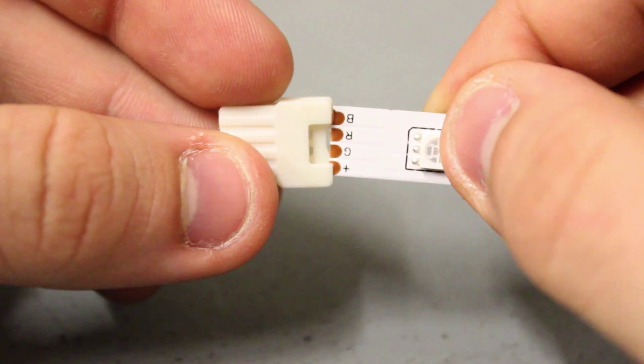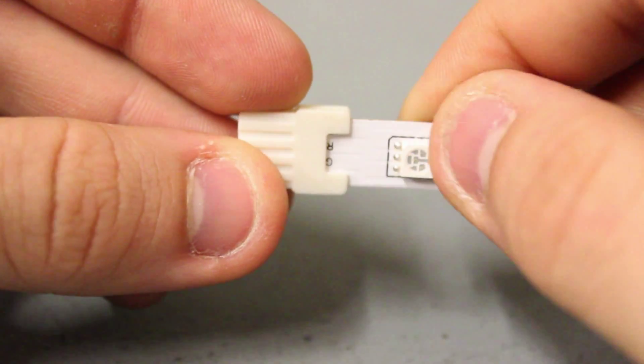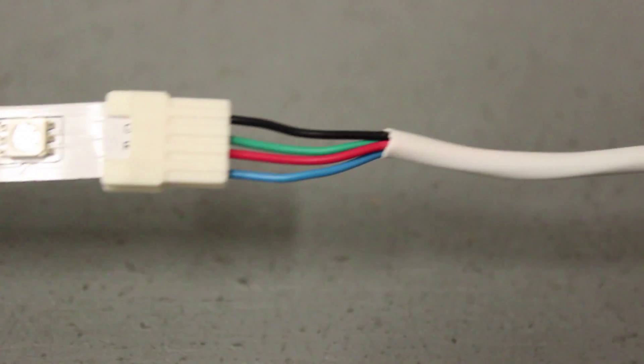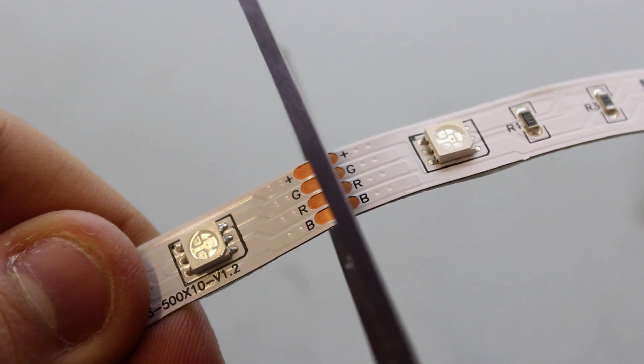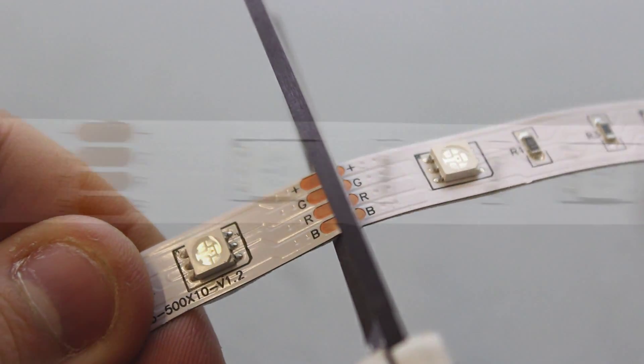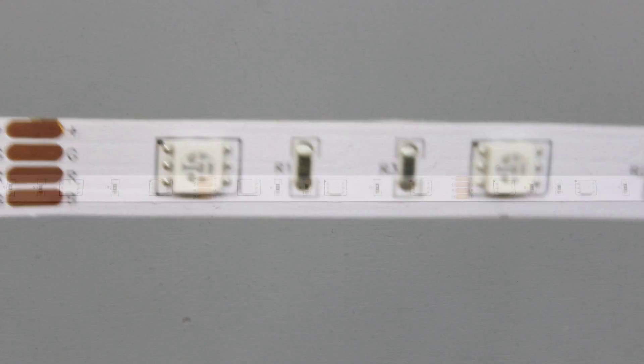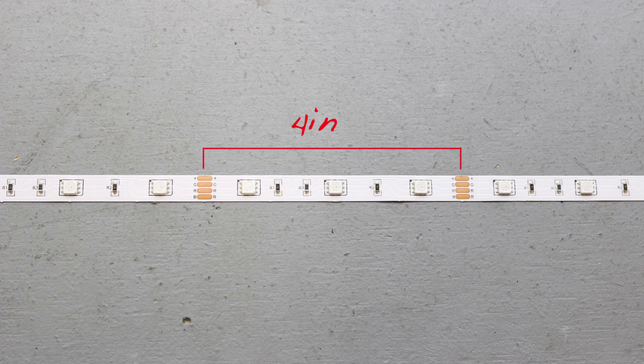We will begin by going through the steps on how to connectorize and terminate a flexible RGB strip. Starting with your RGB strip, cut along the copper ovals for the desired length. For this demonstration we are using a 30 LED per meter RGB strip. Cut points are every 4 inches.